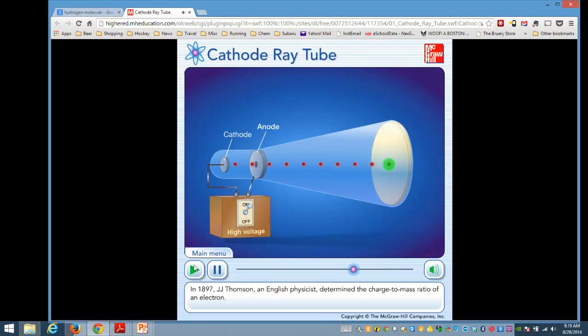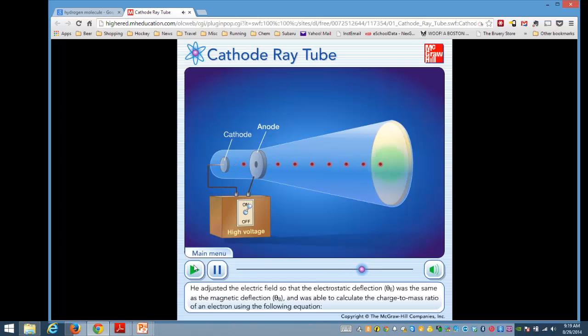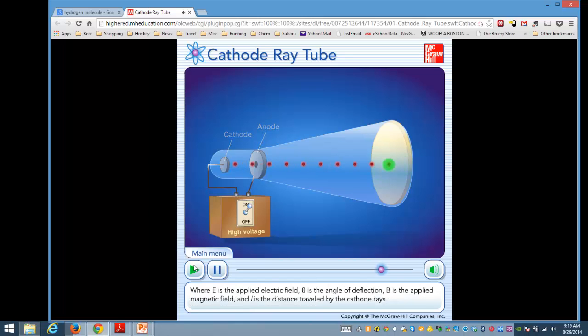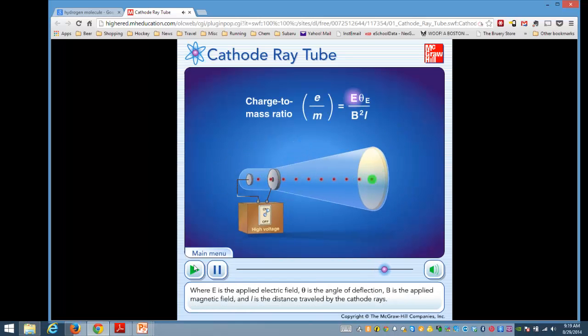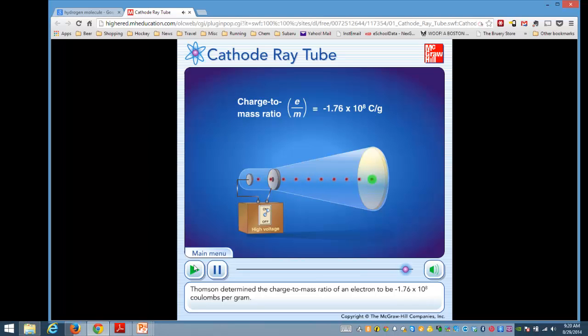In 1897, J.J. Thompson, an English physicist, determined the charge-to-mass ratio of an electron. He adjusted the electric field so that the electrostatic deflection, theta-E, was the same as the magnetic deflection, theta-B, and was able to calculate the charge-to-mass ratio of an electron using the following equation. Where E is the applied electric field, theta-B is the applied magnetic field, and L is the distance traveled by the cathode rays. Thompson determined the charge-to-mass ratio of an electron to be negative 1.76 times 10 to the 8th coulombs per gram.